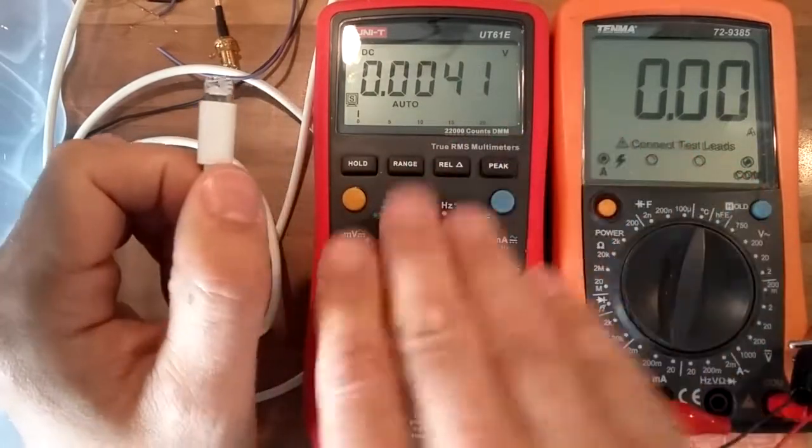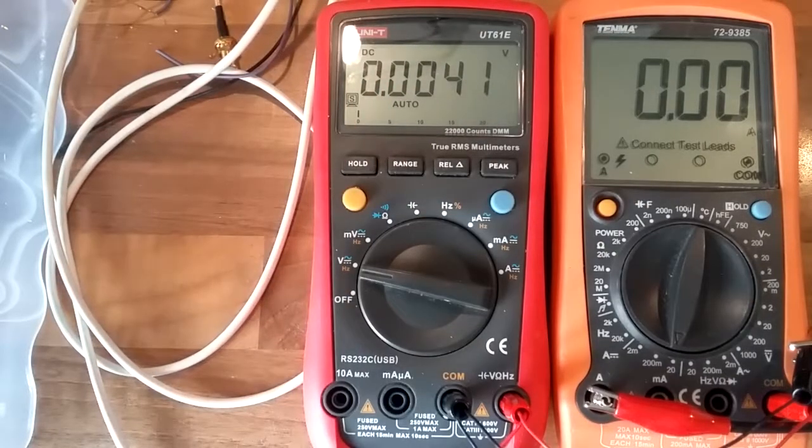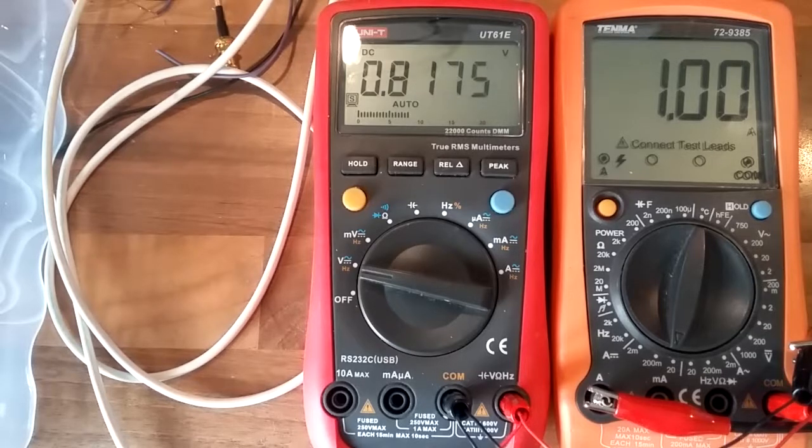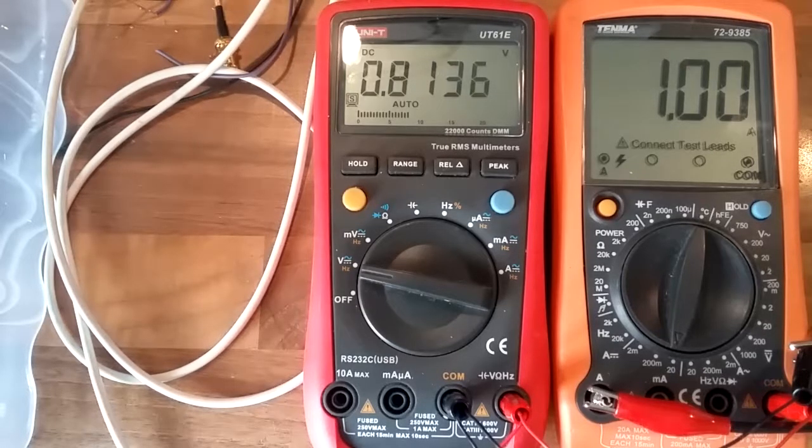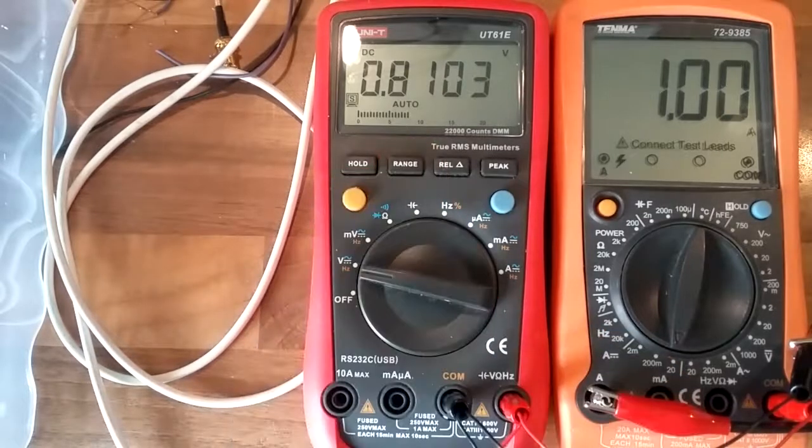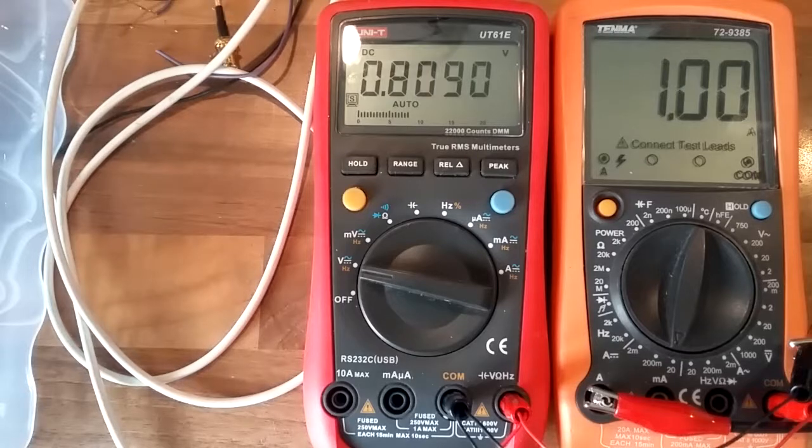Current measured through here, voltage across here—let's turn it on. We have one amp flowing through and 0.81 volts dropped across, which again by Ohm's law, R equals V over I.